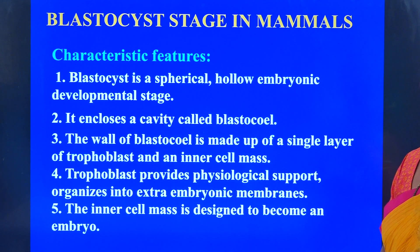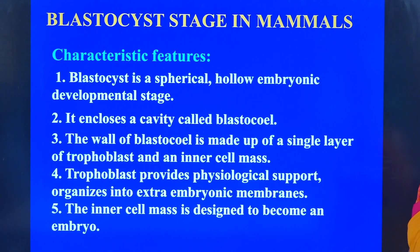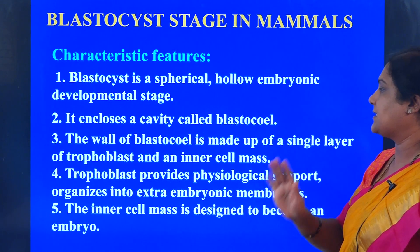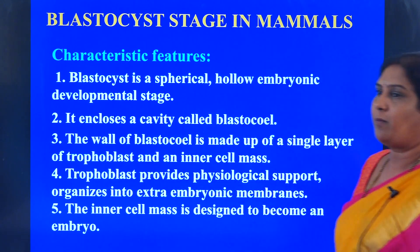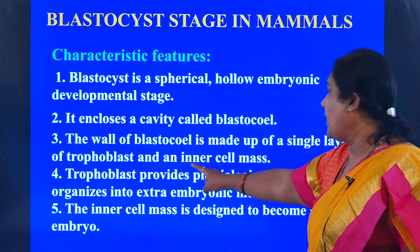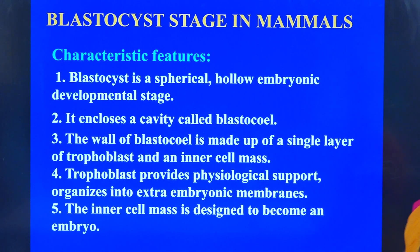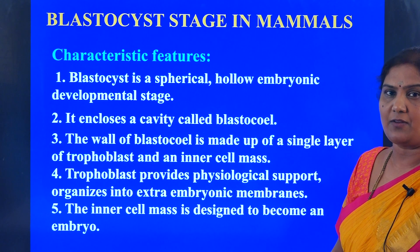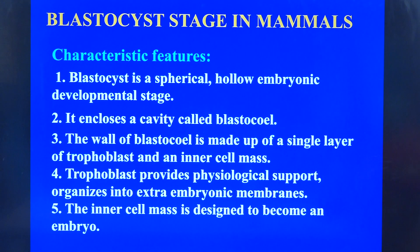What are the characteristic key features of the blastocyst? It is a spherical, hollow embryonic stage during development. It encloses a cavity called the blastocele — the term 'coel' itself indicates a cavity. The wall of the blastocele is made up of a single layer of cells called the trophoblast or trophectoderm. There is also an inner cell mass, which has the capacity to develop into any sort of tissue or organ. The trophoblast provides physiological support and organizes into extra-embryonic membranes such as the amnion, allantois, and yolk sac, while the inner cell mass is destined to become the embryo.